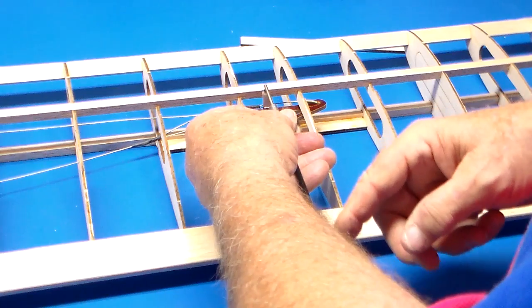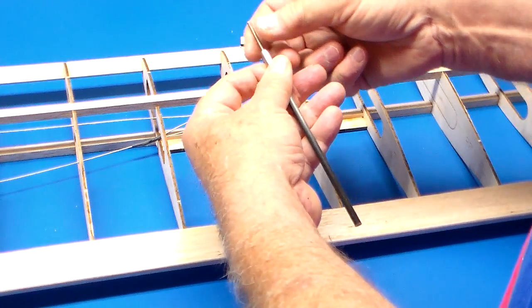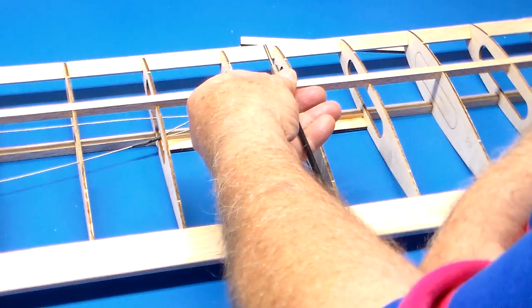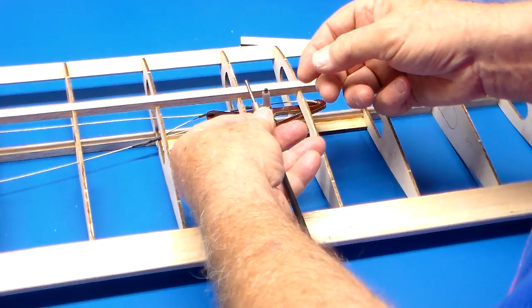...so this back end will have another one of these going to the flap horn, and then of course the other part of the push rod goes back to the elevator. Y'all know how that works.